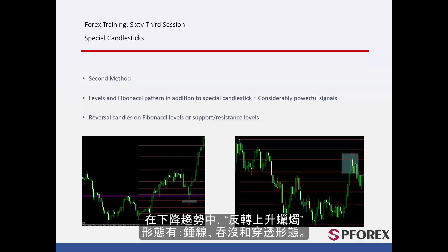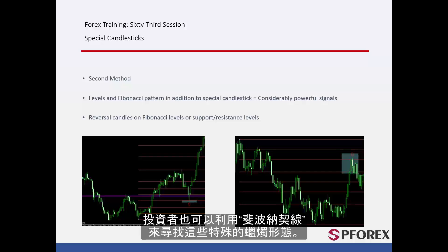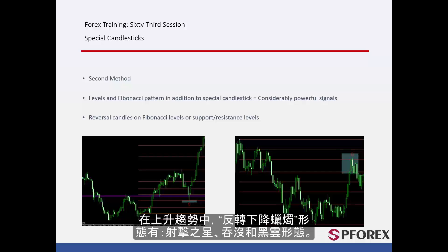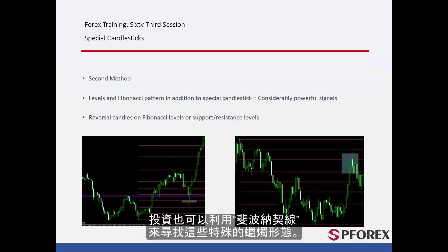Reversal bullish candles such as hammer, engulfing and piercing line form on downward trends. Also, traders can exploit Fibonacci patterns to detect these special candlesticks. Reversal bearish candles such as shooting star, engulfing and dark cloud form on upward trends. Also, traders can use Fibonacci pattern to detect these special candlesticks.